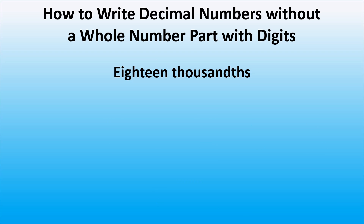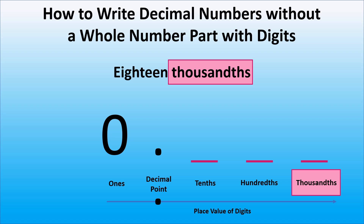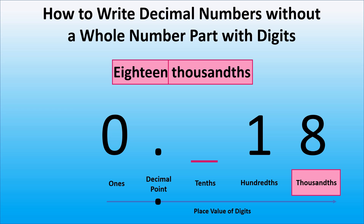And how should we write eighteen thousandths? As we don't have a whole number part, we will write zero followed by the decimal point. Thousandths means that we have three digits to the right of the decimal point. Here we have eighteen, so we will write the digit eight in the thousandth place and the digit one in the hundredth place. As we don't have anything in the tenth place, we will write the digit zero in the tenth place.